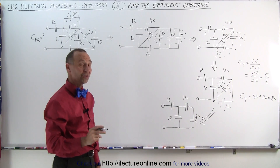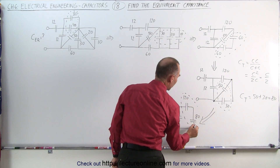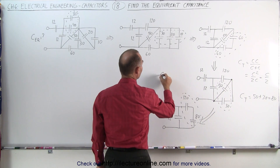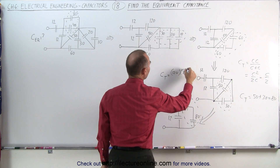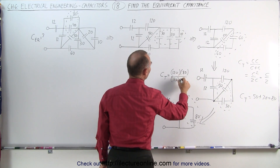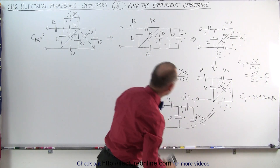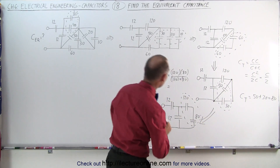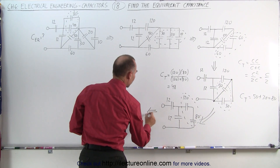We're almost there. Next, we need to look at the two at the end — those two are in series, which means we have to use the product over the sum rule. C total equals 120 times 80 divided by 120 plus 80. Using a calculator, 120 times 80 divided by 200 gives us 48 microfarads for the equivalent capacitance of those two, which means we can now redraw the circuit.